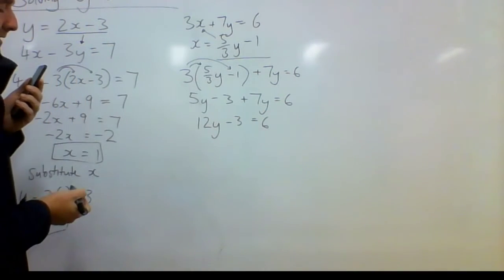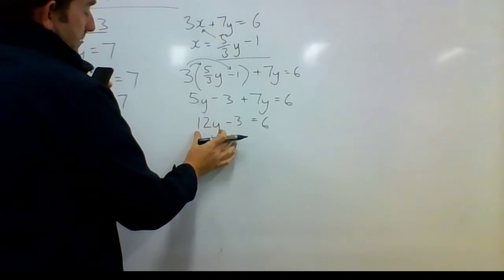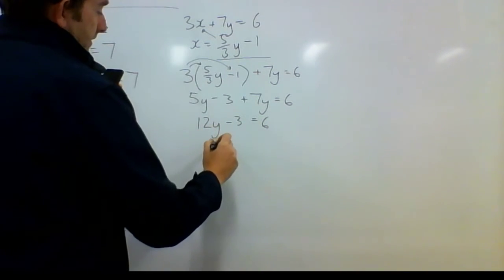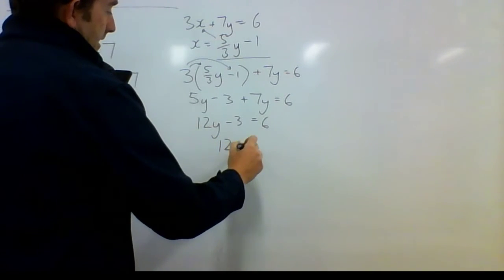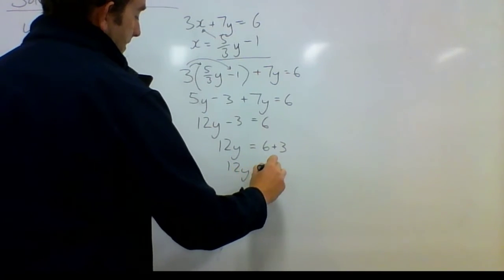I'm going to get that 3 there, that negative 3. And to remove that from this side, I need to add 3 to both sides. So 12y equals 6 plus 3. 12y equals 9.